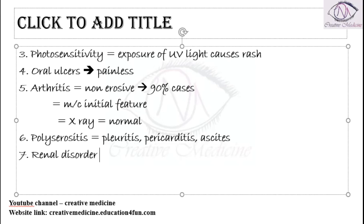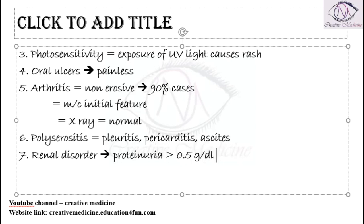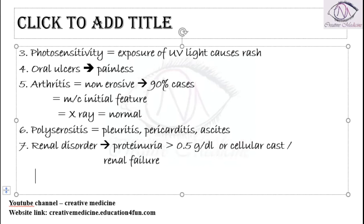The seventh criterion is renal disorder. In renal disorder, the patient can have proteinuria of 0.5 grams per deciliter or more, or cellular casts, or renal failure. The most common renal manifestation is glomerulonephritis, specifically membranous glomerulonephritis.